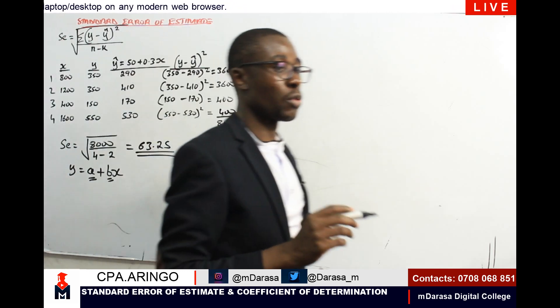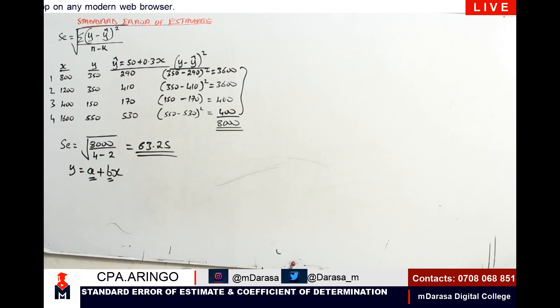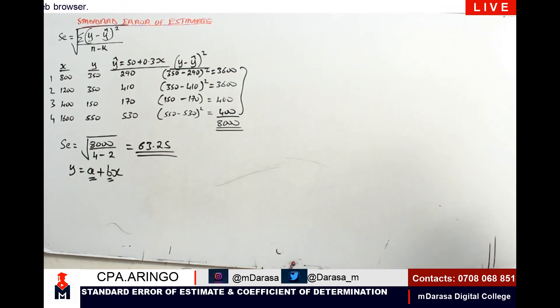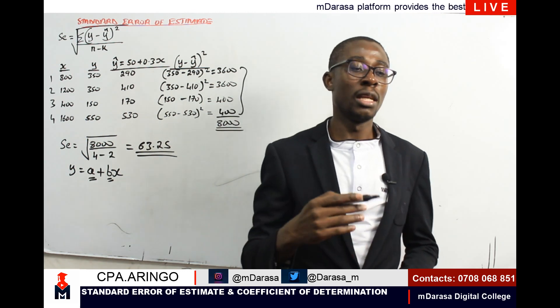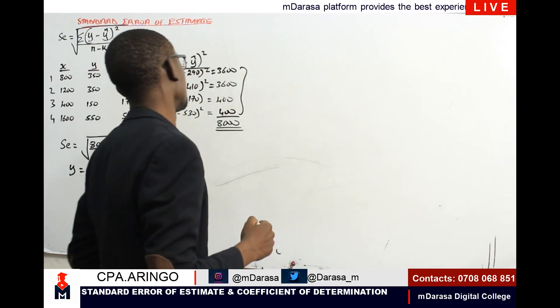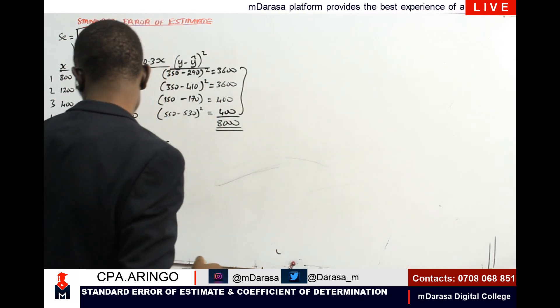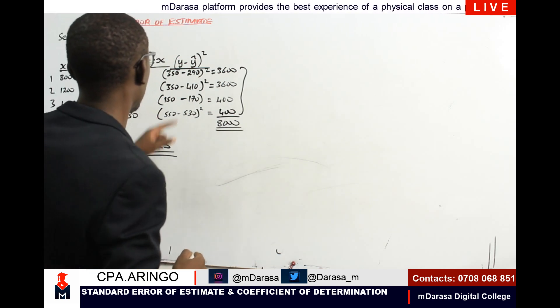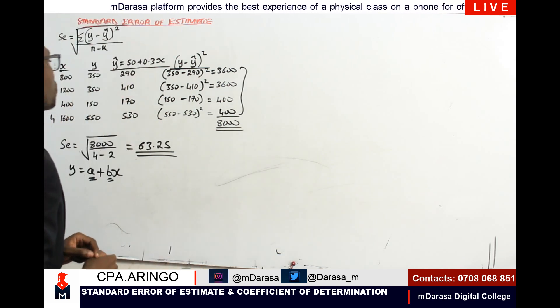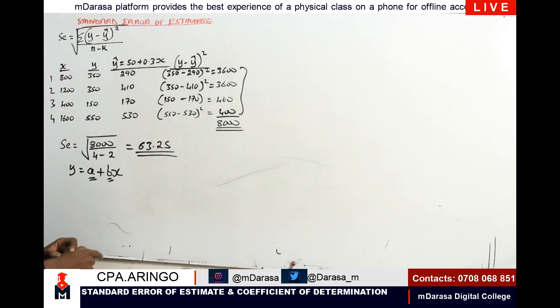That is how we determine our standard error. What you must always have at the back of your mind is that we must always have our regression line, because that is what will guide us to determine our expected cost.